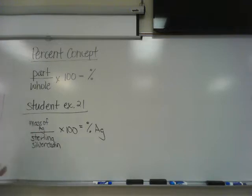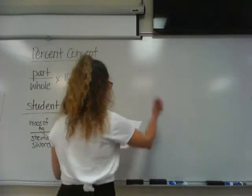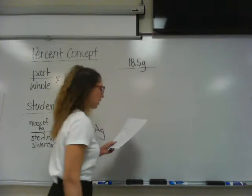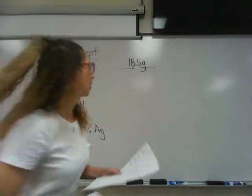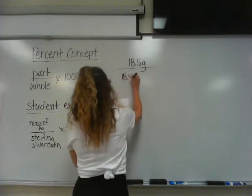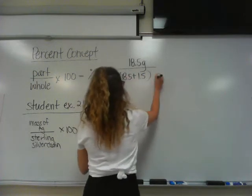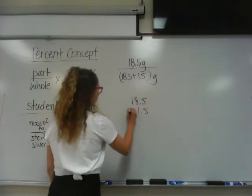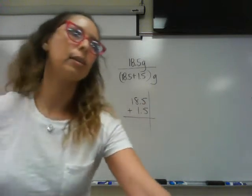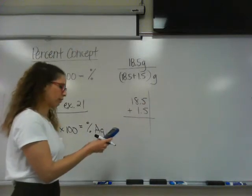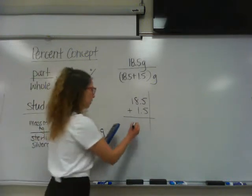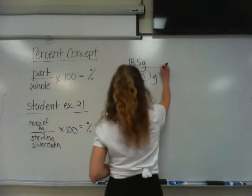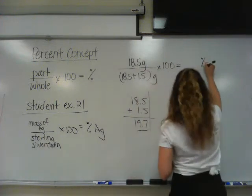So what is the mass of silver in the problem? 18.5 grams. So 18.5 grams and then over the mass of the chain. How would I get the mass of the chain? You add. So it's going to be 18.5 plus 1.5 and that's how you get the mass of your chain. Now, let's just, for the sake of significant figures, add that. Just to make sure that we're going to have the right number of significant figures in our final answer.